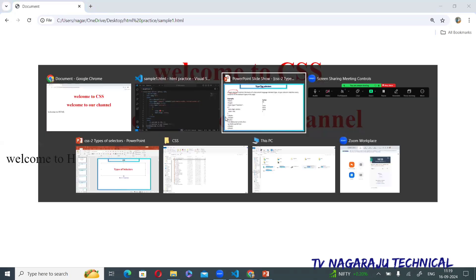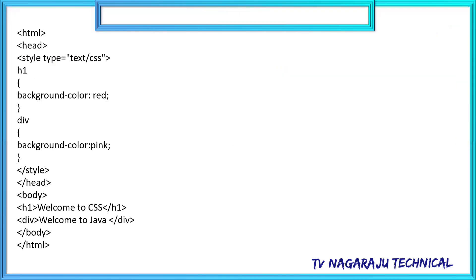After refreshing, the property is applied to the two h1 tags — that is the type selector or tag selector. Now moving to the next one: the ID selector. This means we are selecting corresponding tags based on some identification. It is mainly used to specify a style for a single, unique element. It is prefixed with a hash symbol — for example, #div.